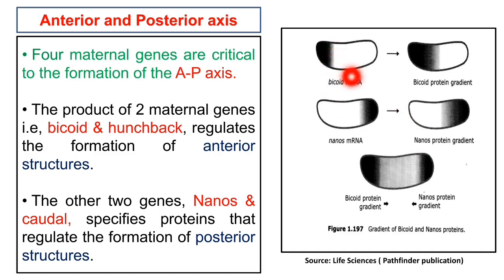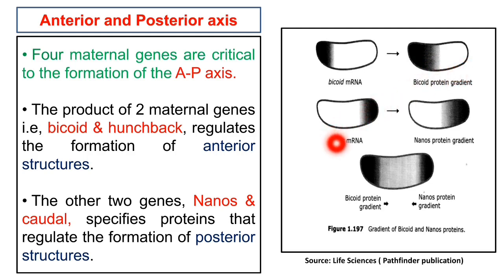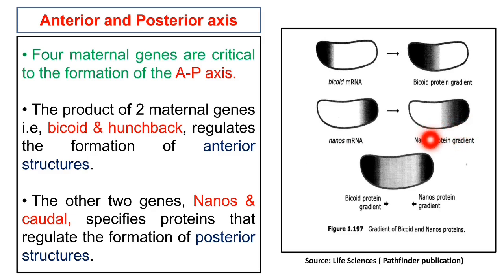The bicoid morphogen first appears in the egg as mRNA at the anterior end. After fertilization, the mRNA is translated into bicoid protein that diffuses towards the posterior end of the embryo. The nanos mRNA transcribed during oogenesis is stored at the posterior end; after fertilization, the nanos protein diffuses from the posterior region. Both bicoid and nanos gradients are thus present in the embryo.